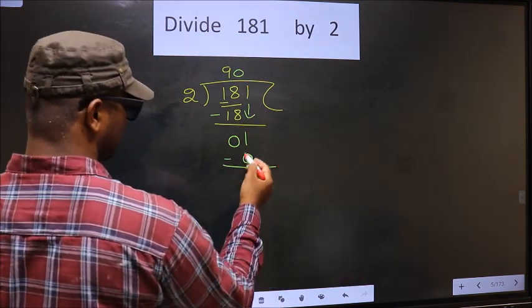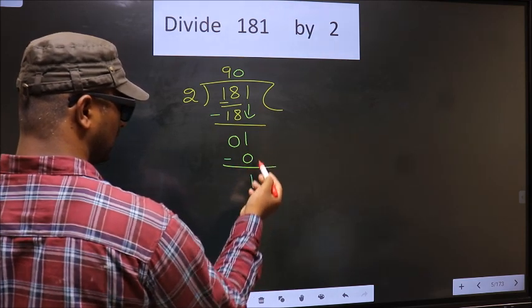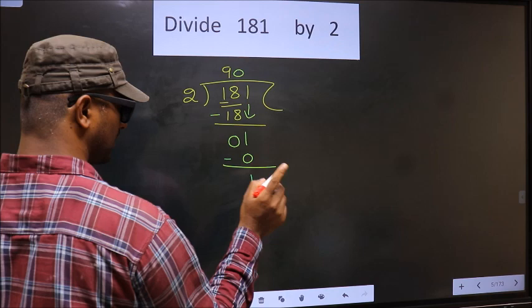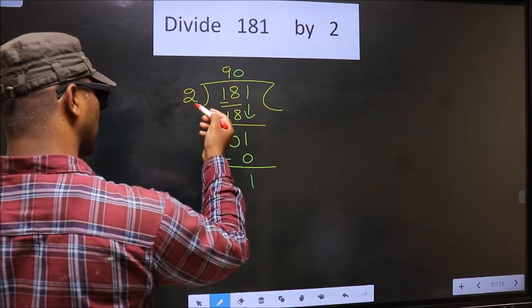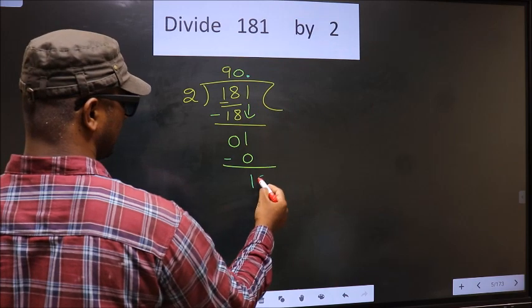Now you subtract. 1 minus 0, 1. Over here we did not bring any number down. And 1 is smaller than 2. So now you put a dot and take 0.